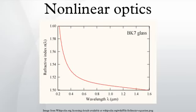Non-linear optics is the branch of optics that describes the behavior of light in non-linear media, that is, media in which the dielectric polarization P responds non-linearly to the electric field E of the light. This non-linearity is typically only observed at very high light intensities such as those provided by lasers. Above the Schwinger limit, the vacuum itself is expected to become non-linear. In non-linear optics, the superposition principle no longer holds.